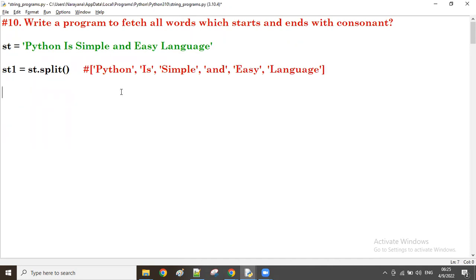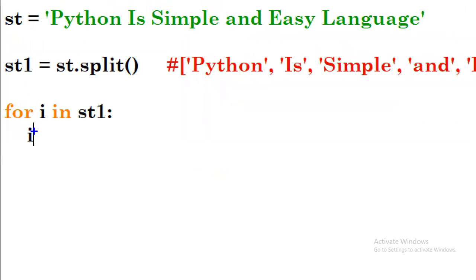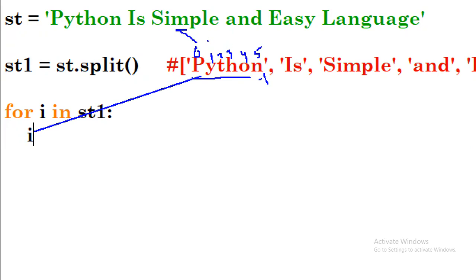Now to get words one by one, we use: for i in st1. The first time i value is the first word. In Python, index number zero, one, two, three... and from the backward: minus one, minus two, minus three. The start index is always zero; since the ending index is not fixed in positive indexing, the last character's fixed index is minus one.